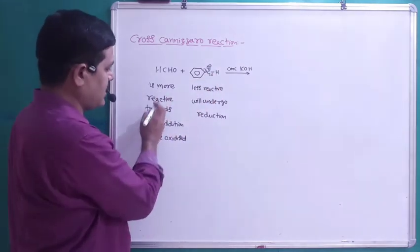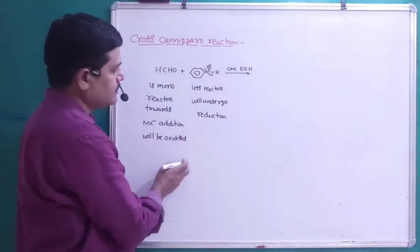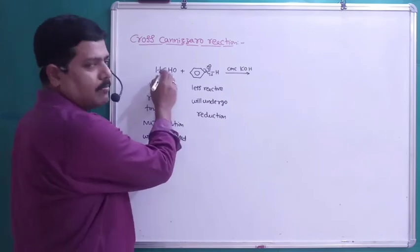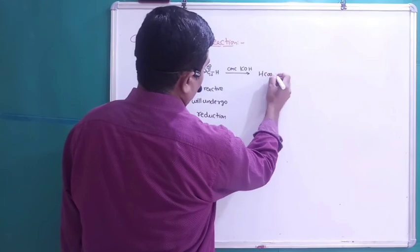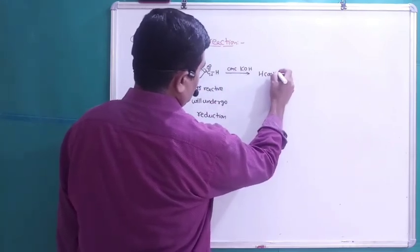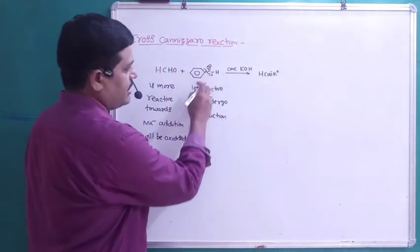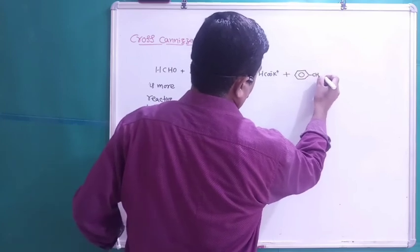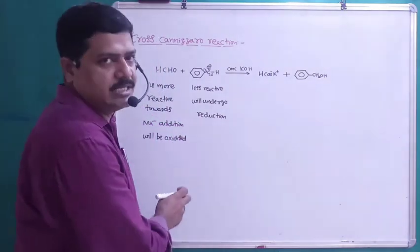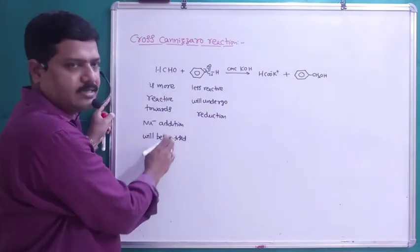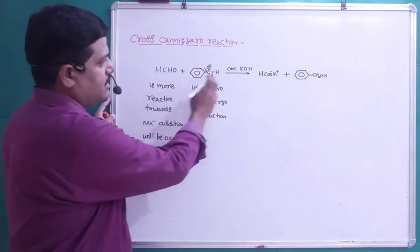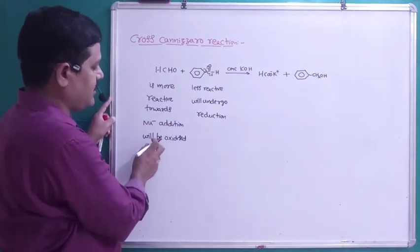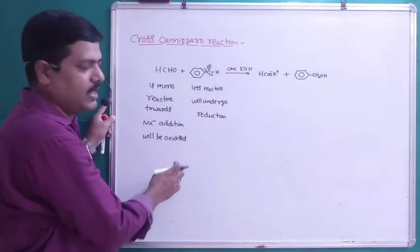So formaldehyde, being more reactive towards nucleophilic addition, will be oxidized and is converted into formic acid, HCOOH. Since base is present, we will get the salt HCOO⁻K⁺. And benzaldehyde, which is less reactive towards nucleophilic addition, will undergo reduction to form benzyl alcohol, C6H5CH2OH. This is known as the Cross Cannizzaro Reaction. In summary, when two different aldehydes — both without any alpha hydrogen — are treated with concentrated KOH or NaOH, the aldehyde more reactive towards nucleophilic addition will be oxidized, and the one less reactive will be reduced.